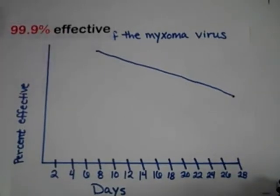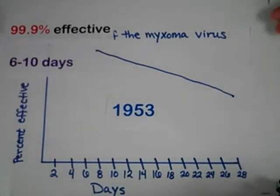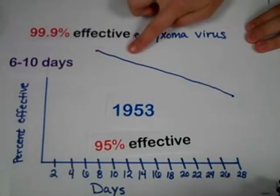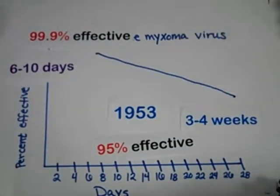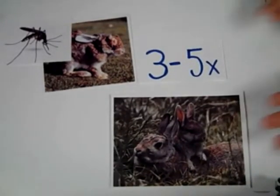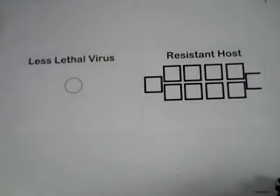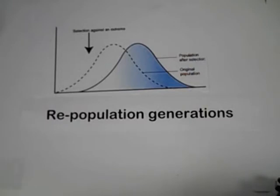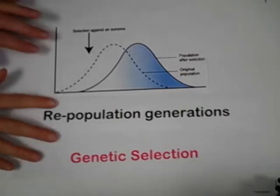The virus was 99.9% effective at killing its host in six to ten days. By 1953, the virus had decreased to only being 95% effective and it now took three to four weeks for the virus to kill its host. Although this may seem as a disadvantage for the virus, it actually meant that mosquitoes could bite an infected rabbit and spread myxomatosis three to five times longer before the host's death. As less virulent viruses were selected for, this created room for a greater number of resistant individuals to survive. These rabbits that survived then gave rise to the resulting repopulation generations, and thus there was a strong selection for resistant individuals to help rebound the rabbit population.